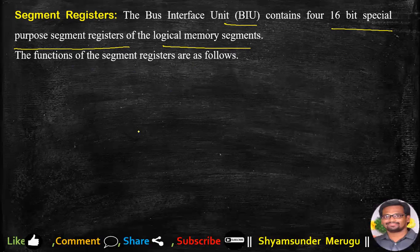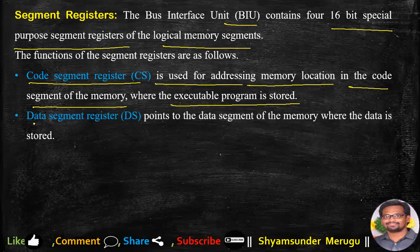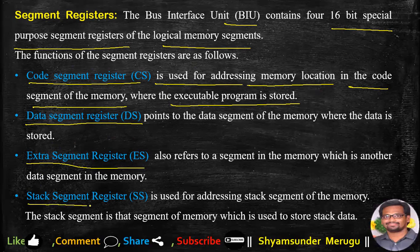The code segment register is used for addressing memory locations in the code segment of the memory where the executable program is stored. The data segment register points to the data segment of the memory where the data is stored. The extra segment register refers to another data segment in the memory. The stack segment register (SS) is used for addressing the stack segment of the memory, which is used to store stack data.